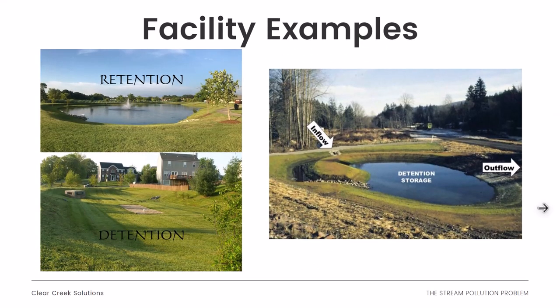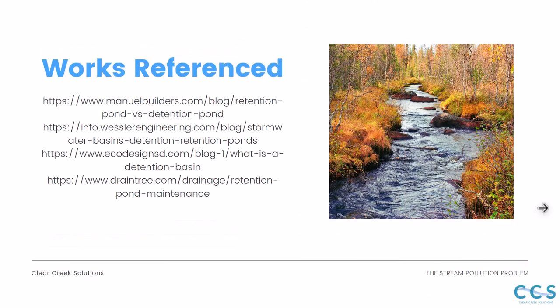Here are some example pictures of facilities that are utilized. The retention facility on the top left shows an actual pool of water. Detention is basically that pond filling up and then draining out through the different outlet structures — inflow comes through the pipe, goes into the detention storage, and eventually outflows back into the natural environment. If you have a question about detention, retention, or stormwater facilities, leave it in the comments below and check out that free guide to learn more about the different kinds of hydrology utilized today.